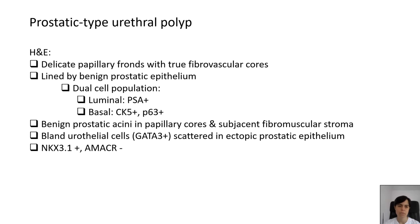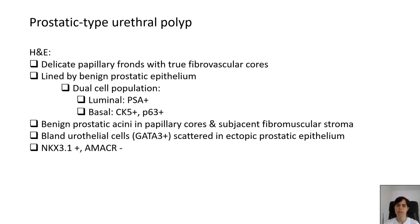Microscopically, prostatic-type urethral polyps show delicate papillary fronds with true fibrovascular cores lined by benign prostatic epithelium with its typical dual cell population of luminal PSA-positive cells and basal cells showing expression of basal cell markers such as high molecular weight cytokeratins or P63. Benign prostatic acini are usually seen in the papillary cores and in the subjacent fibromuscular stroma. Another feature commonly seen in these lesions is benign scattered urethral cells intermixed with the prostatic epithelium lining the papillary structures.